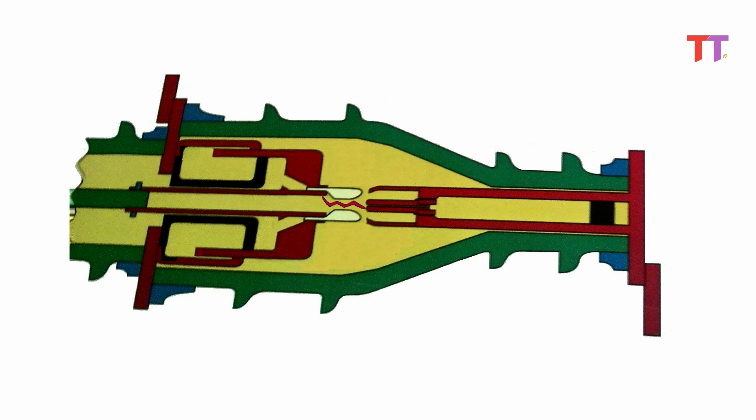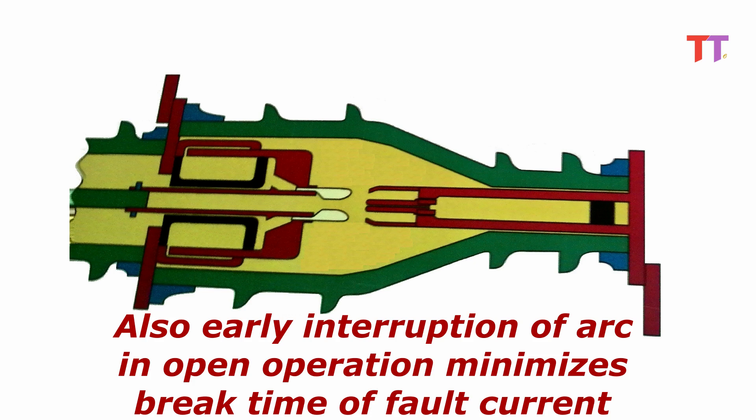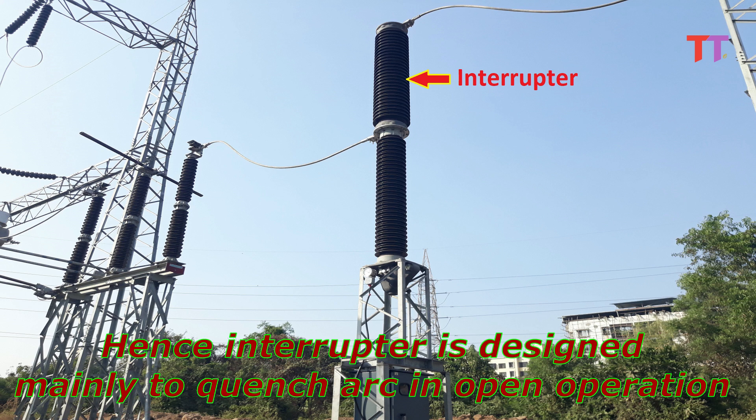But in open operation, contacts move away from each other. Arc is formed and it gets elongated as contacts move away from each other. This phenomenon persists longer. Also early interruption of arc in open operation minimizes break time of fault current. Hence interrupter is designed mainly to quench arc in open operation.